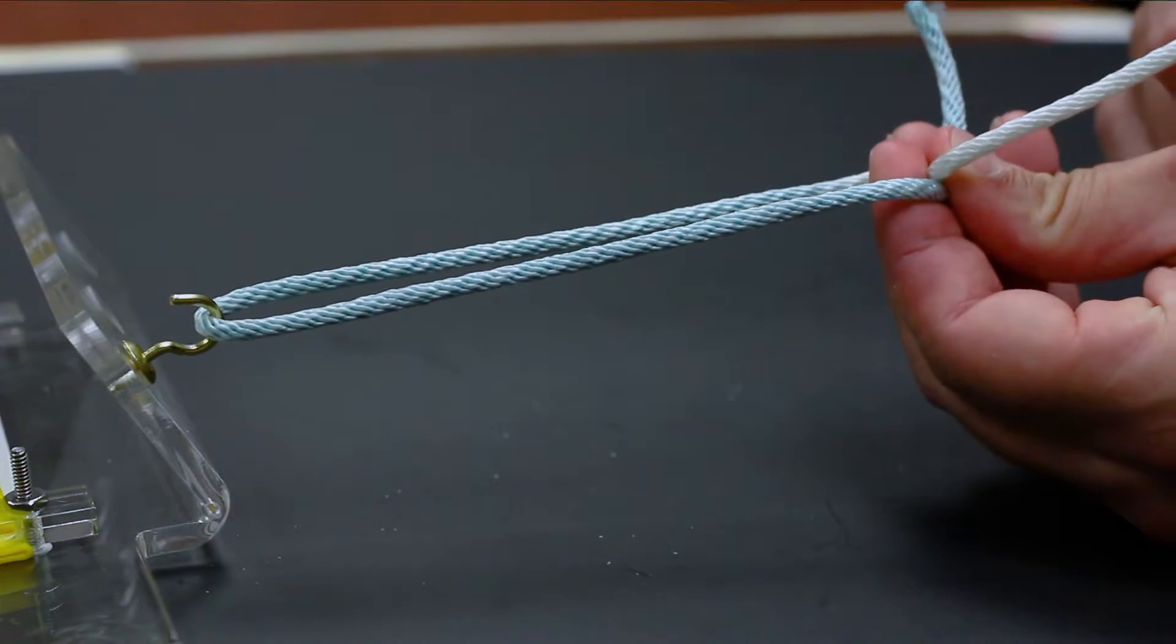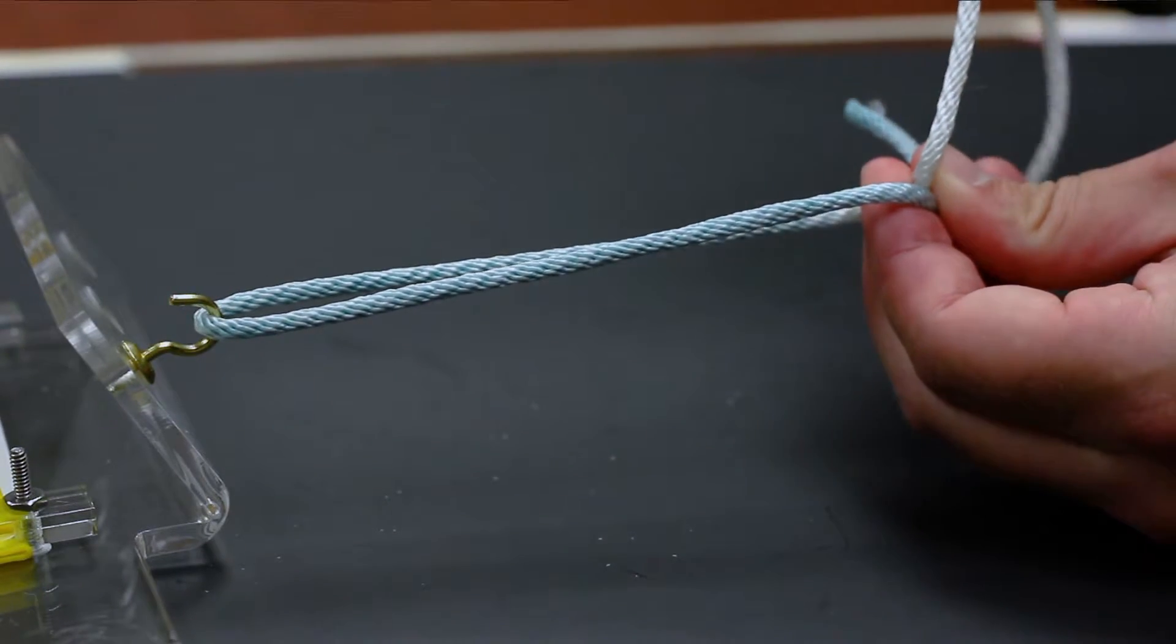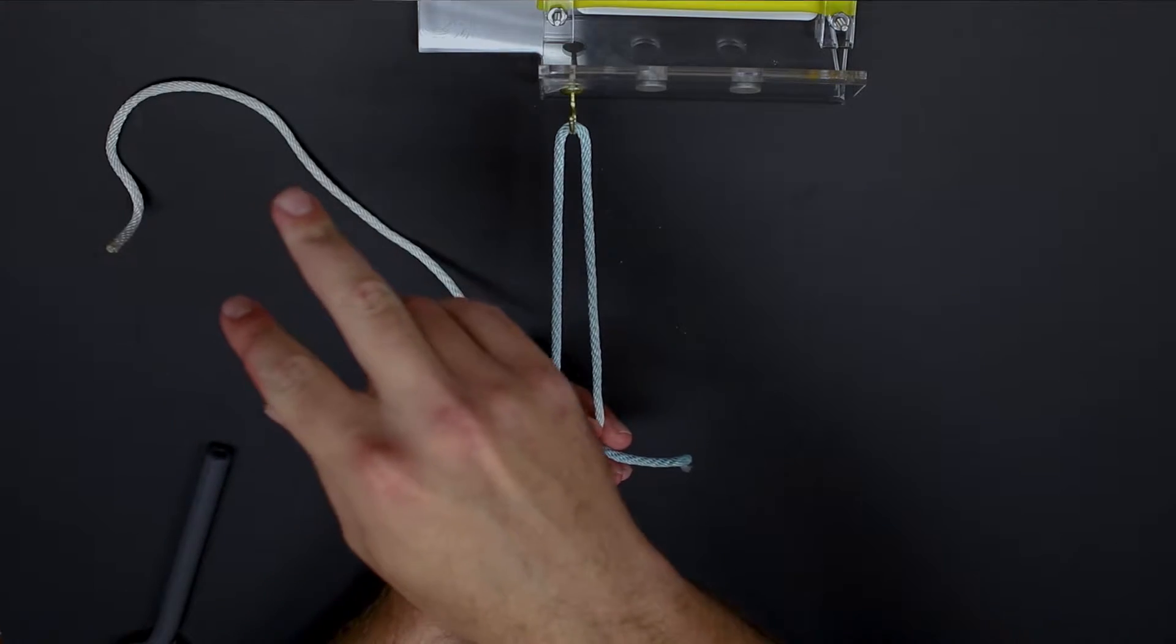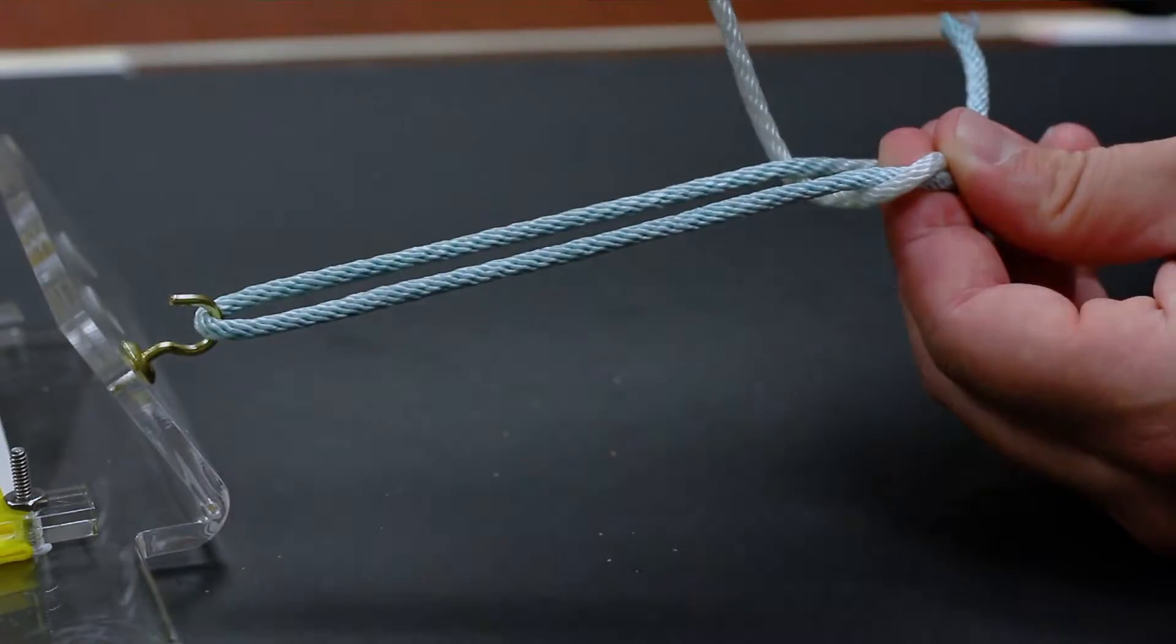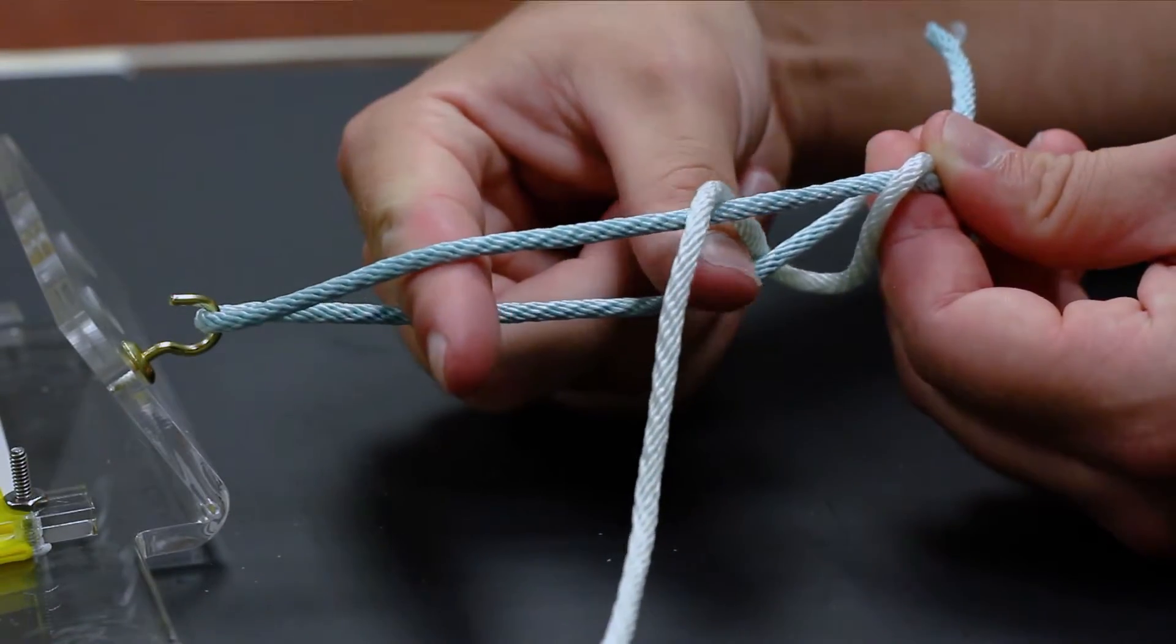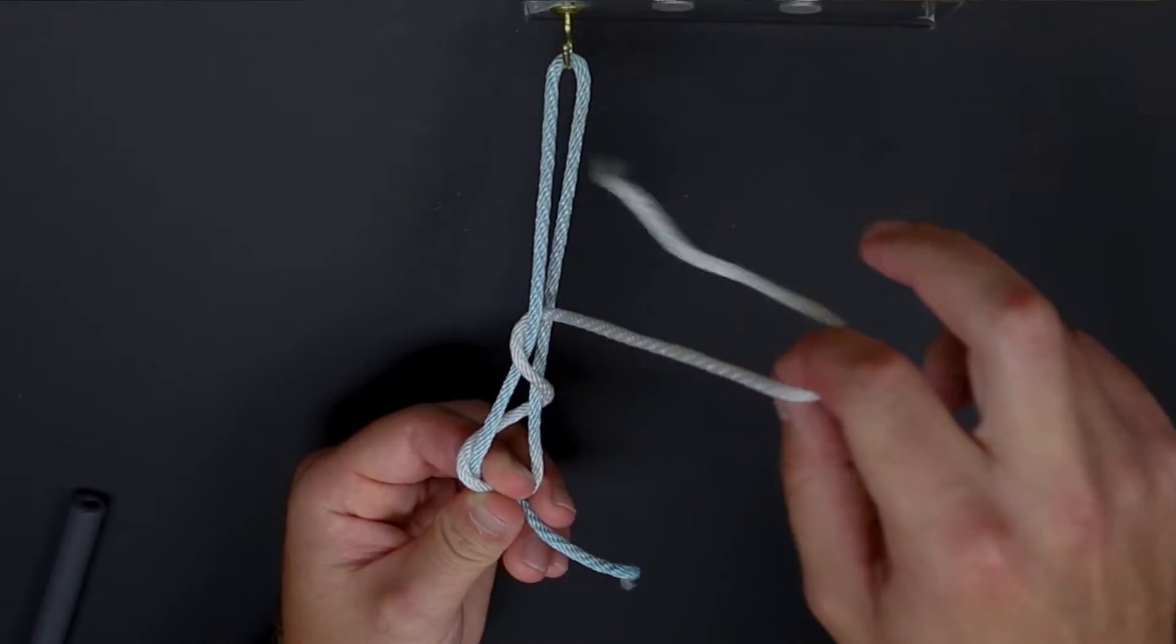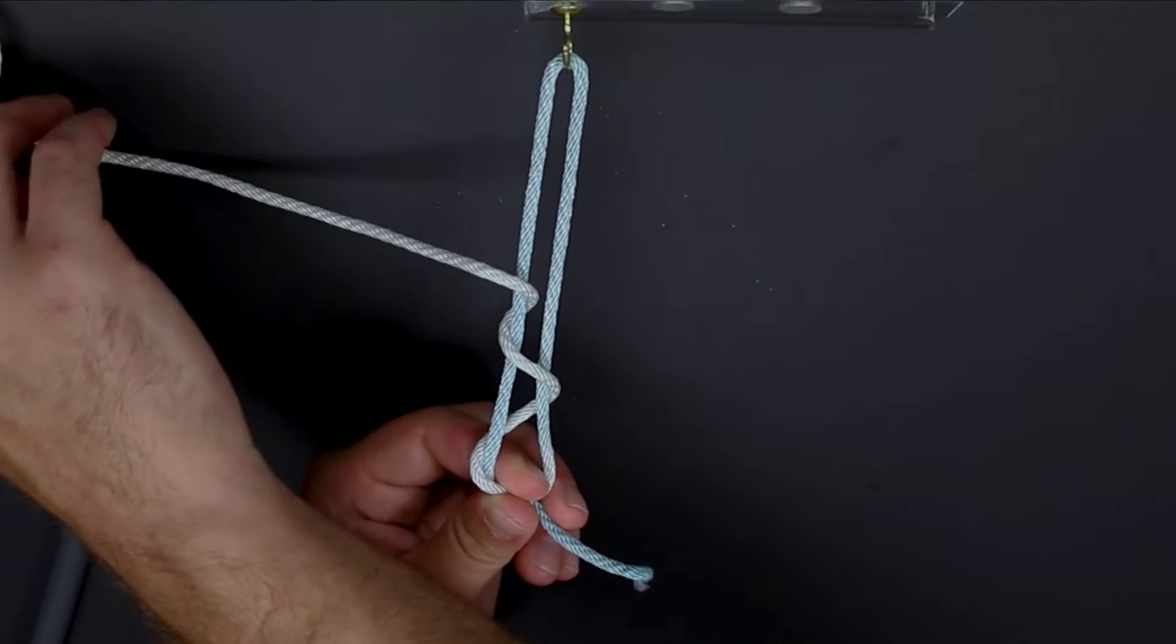We begin by first pinching the two limbs between the index and thumb. We then bring the loop limb over the top, underneath, over the top once more, and then we bring our fingers through the two loops and then over again.